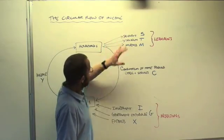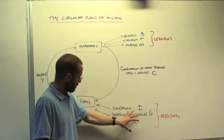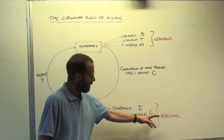These three flow out of the economy and they are termed leakages. These three flow into the economy and they are called injections.